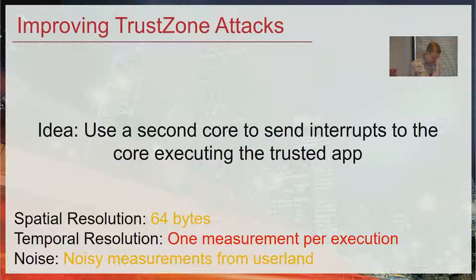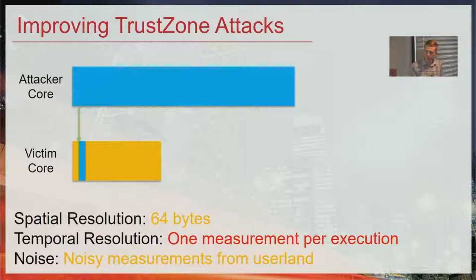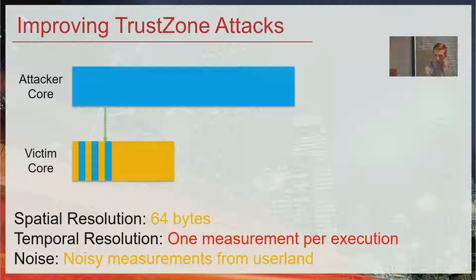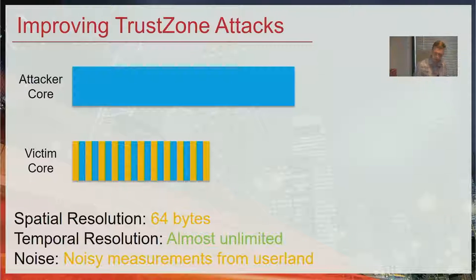This raises the idea at the start of my work: what if we do something like the cache zoom attack, using interrupts to interrupt the core running the trusted application? We have the attacker core running attacker code in the non-secure world, and the victim core running victim code in the secure world. From the attacker core, we send interrupts. Because that secure monitor mode sends the interrupts down to the non-secure kernel, we can execute a small slice of kernel code, return flow back to the victim, schedule another interrupt, and repeat. We essentially interleave the victim process with the attacker process — getting almost unlimited temporal resolution by changing how frequently we schedule interrupts to the victim core.